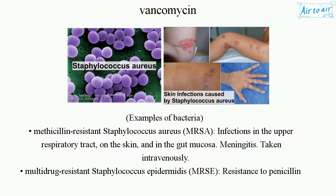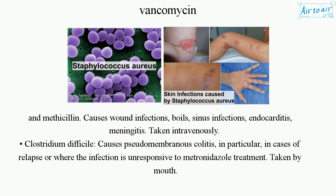Examples of bacteria it treats include Methicillin-resistant Staphylococcus aureus (MRSA) infections in the upper respiratory tract, on the skin, and in the gut mucosa, as well as meningitis. It is taken intravenously. Multidrug-resistant Staphylococcus epidermidis (MRSE), which is resistant to penicillin and methicillin, causes wound infections, boils, sinus infections, endocarditis, and meningitis, and is also treated intravenously.